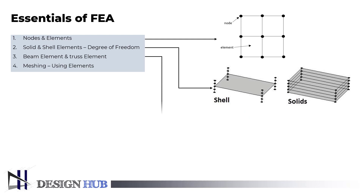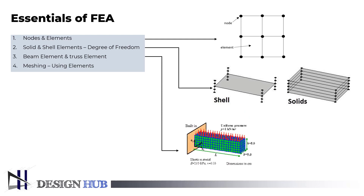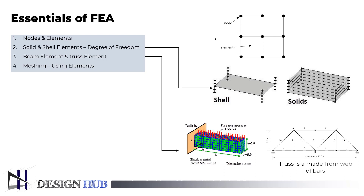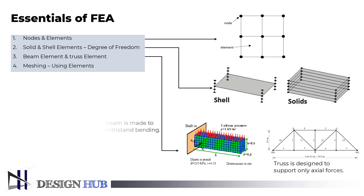The third essential element of FEA is the beam element and truss element. A truss is a structure made up of a web of bars that only experience tension or compression. The bars are only joined together by pin joints, which allows them to pivot. A beam is a particular kind of structural component made to withstand bending. A truss is a structural element designed to support only axial forces, therefore it deforms only in its axial direction. The cross section of the bar can have arbitrary geometry, but its dimensions should be much smaller than the bar length.